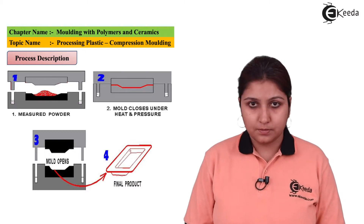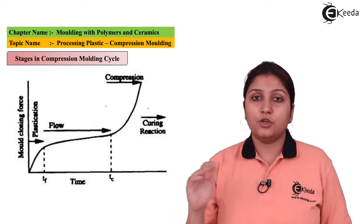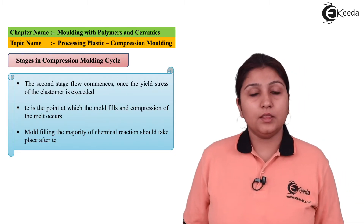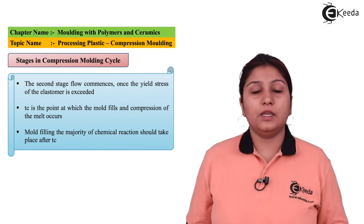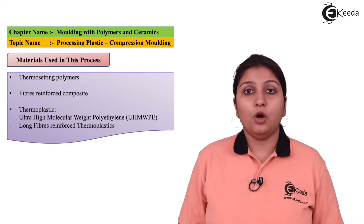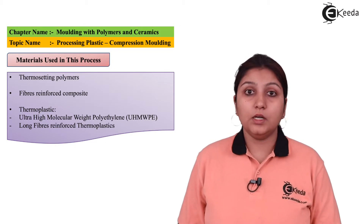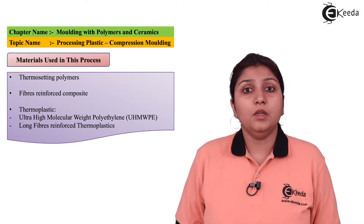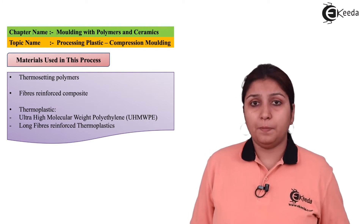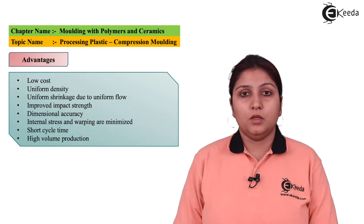In this graph you can see the flow of the material, compression of the material, and then curing of the material. The first stage is plastication, where the actual flow of material takes place inside the die cavity. In the second stage, the mold is getting filled with material and taking its shape slowly within a certain heating range. The materials that can be compressed include polymers, thermoplastics, and various other plastic materials.